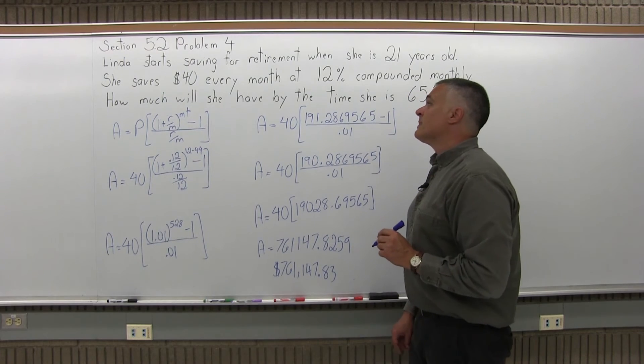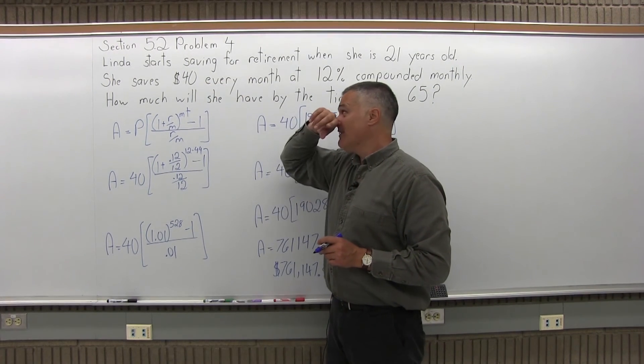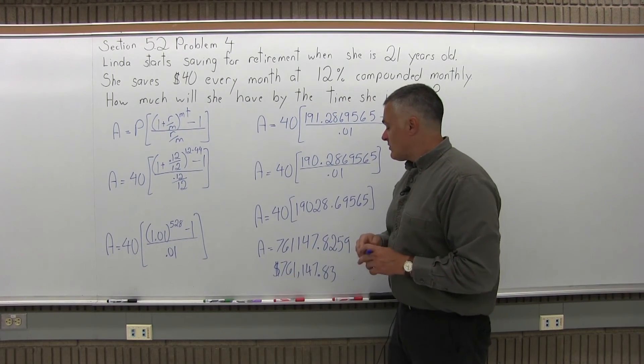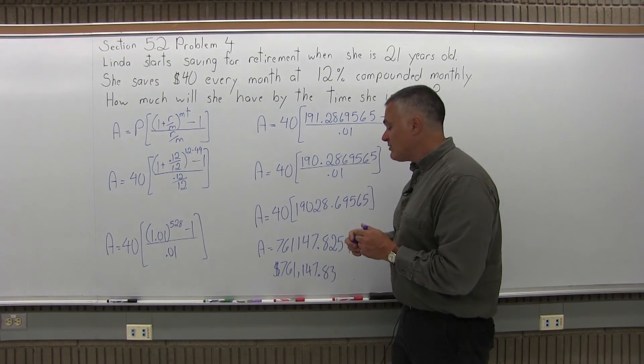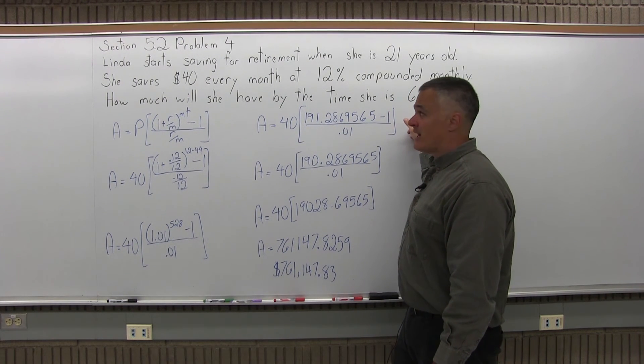So if Linda saves a fairly small amount, $40 every month, she'll wind up with $761,000, even a little bit more after 44 years, by the time she retires.